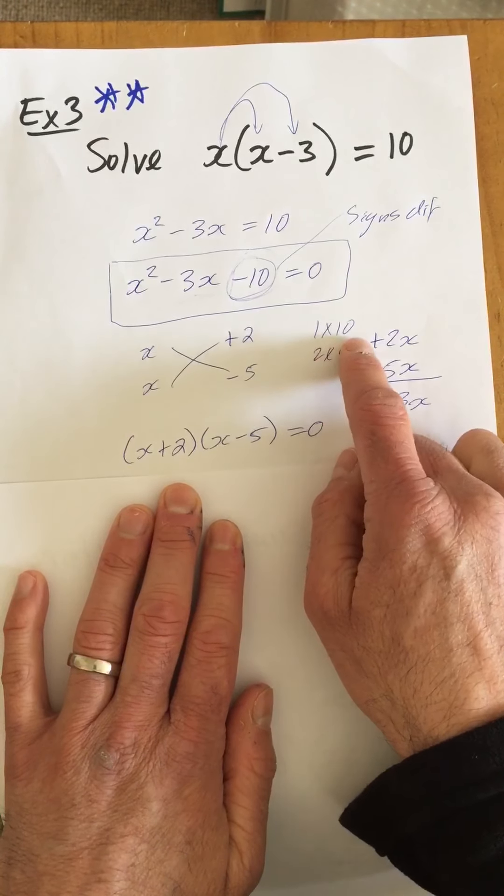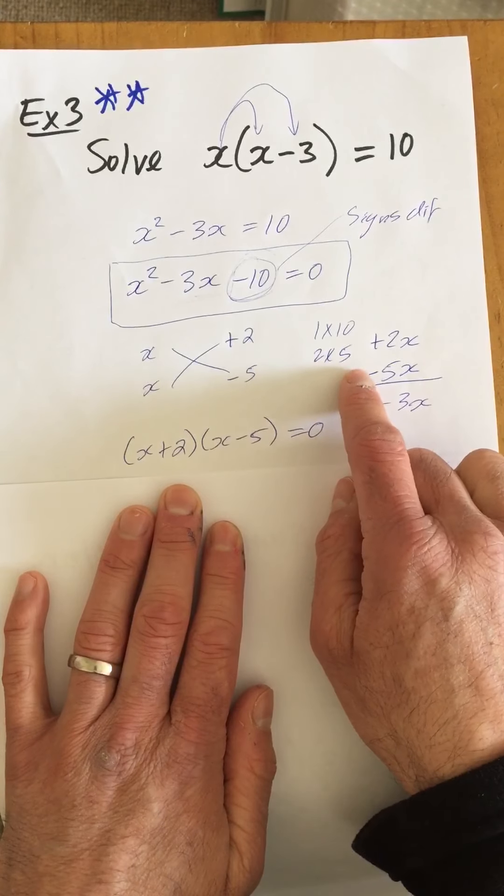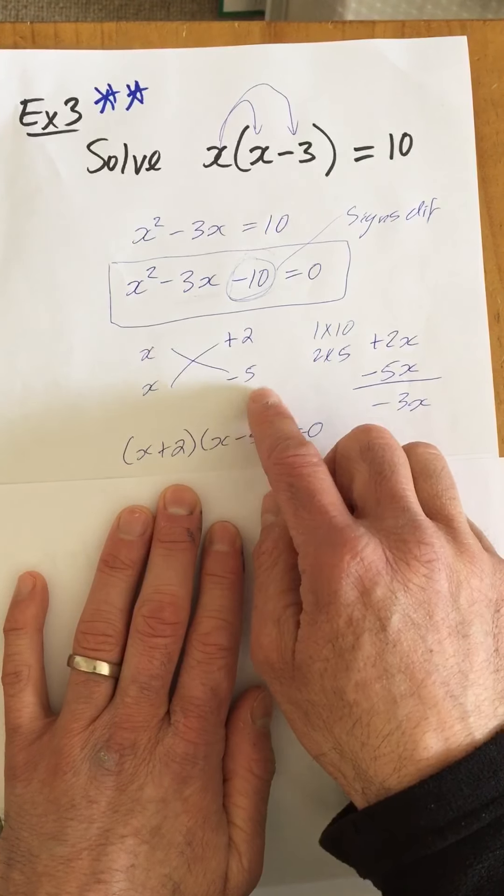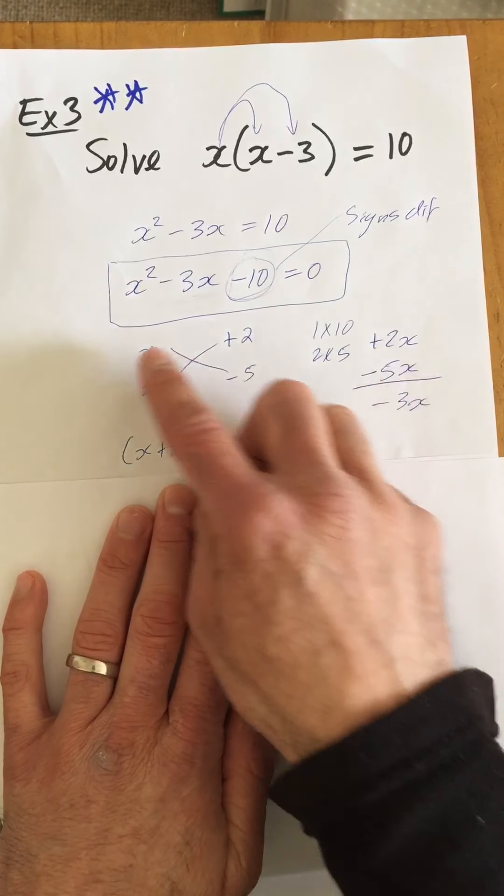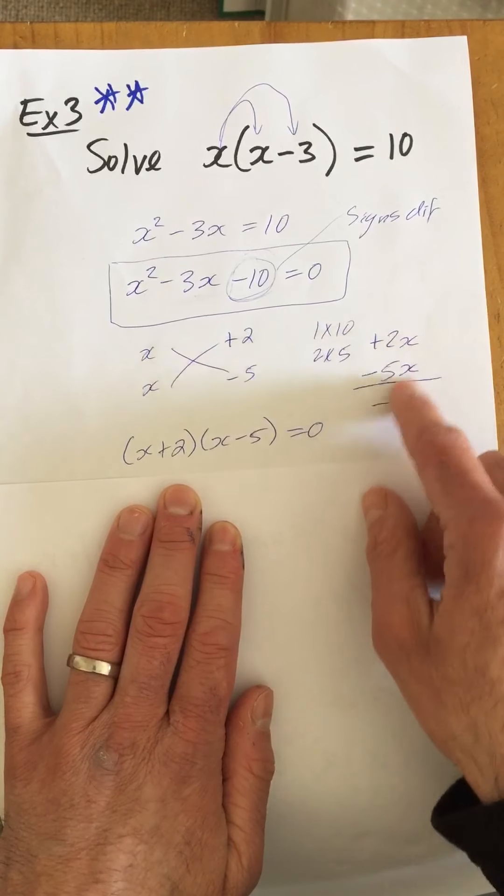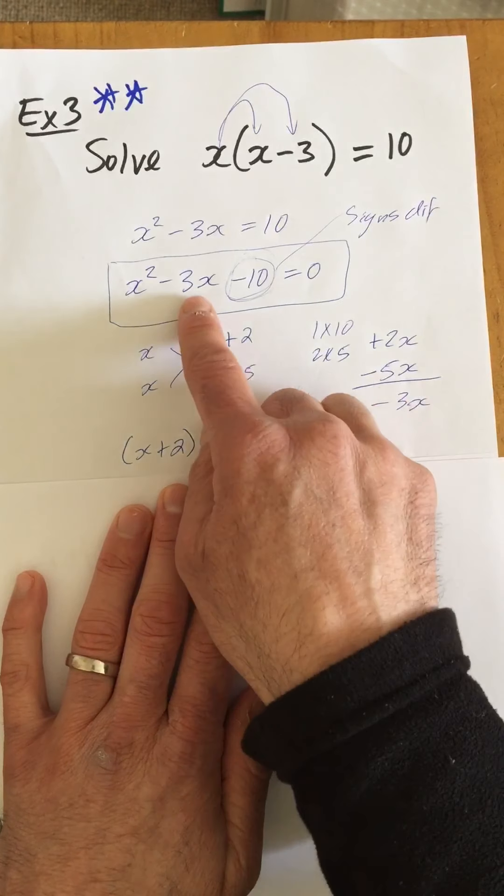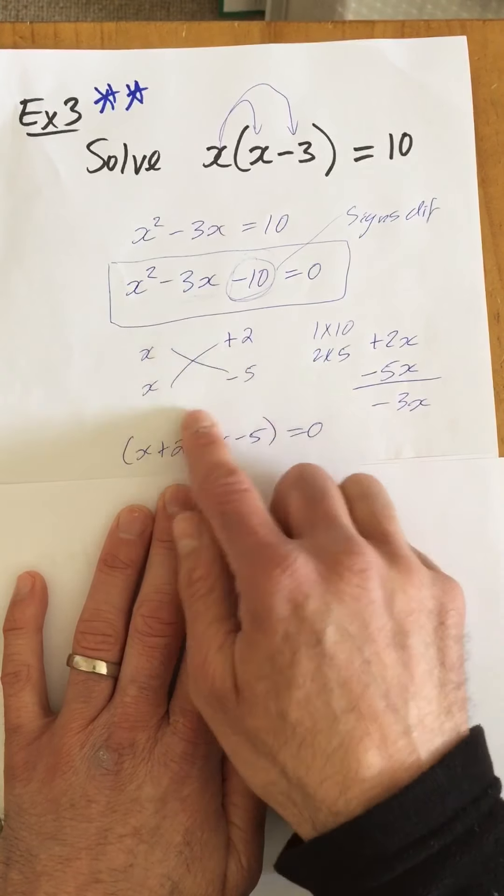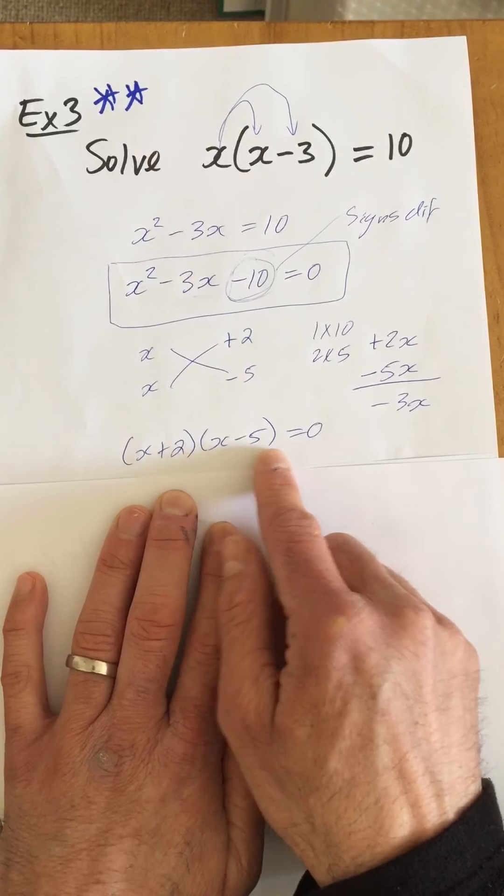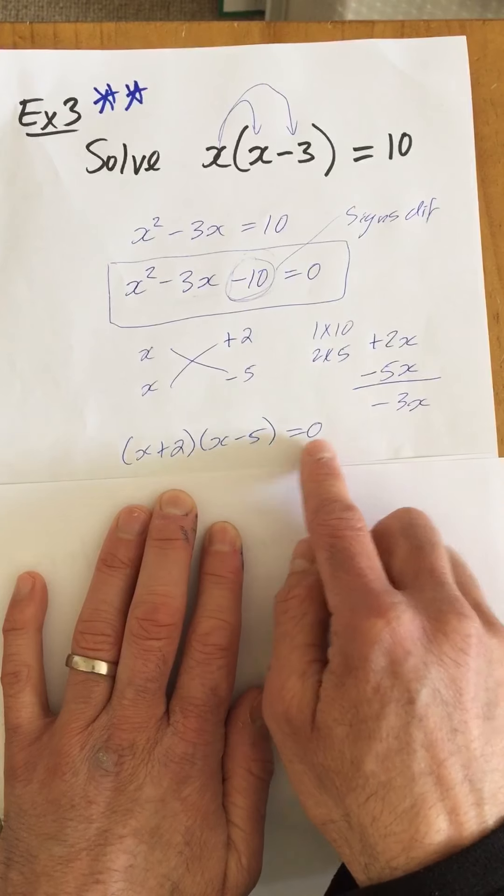The possible factors are 1 multiplied by 10 and 2 multiplied by 5. The signs are going to be different. I think 2 and 5 will work. 2 times x is 2x. 5 times x is 5x. If I make the 2 positive and the 5 negative, when you add these together you get -3x which matches the middle. So I know my factors are correct. So it's (x+2) in one bracket multiplied by (x-5) in the other bracket equals zero.